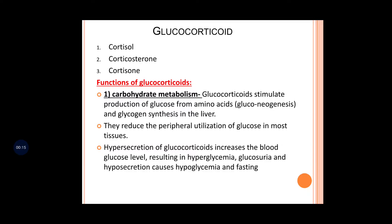What are the functions of glucocorticoid? Going by its name, it is helpful in maintaining the glucose concentration. It stimulates the production of glucose from amino acids and glycogen synthesis in the liver, and reduces the peripheral utilization of glucose in most tissues. If there is hypersecretion, the person can suffer from hyperglycemia, and because of the increased glucose concentration, glucose will appear in urine — glucosuria.